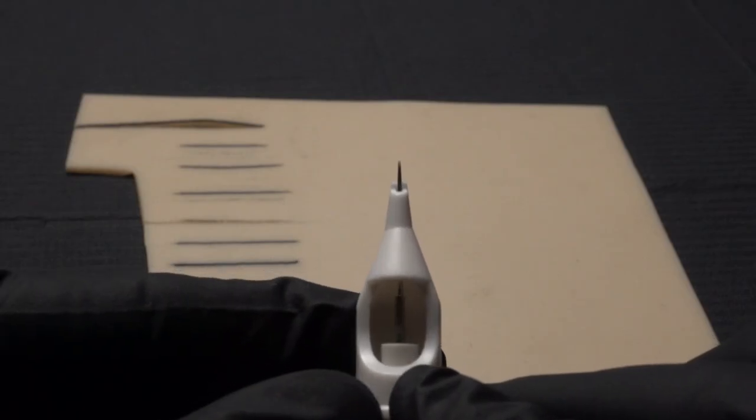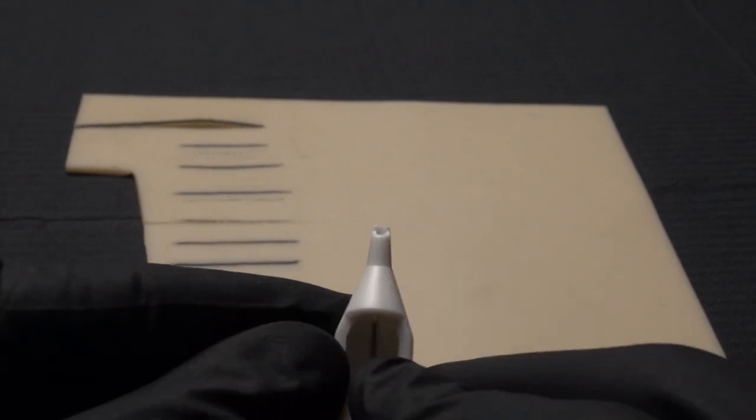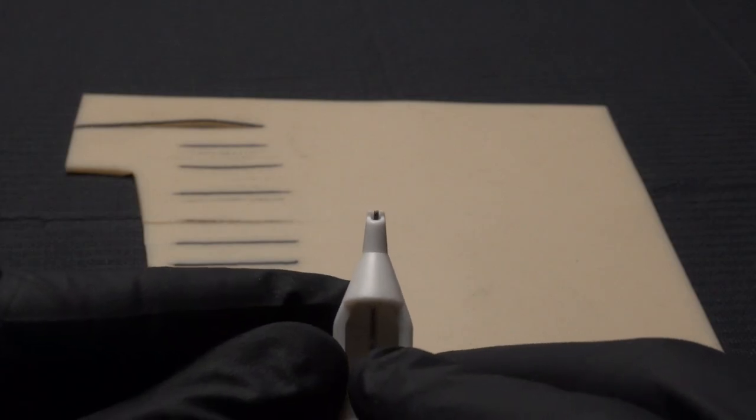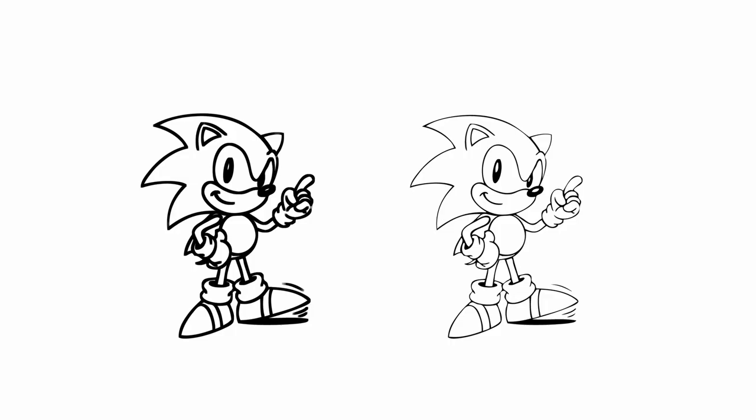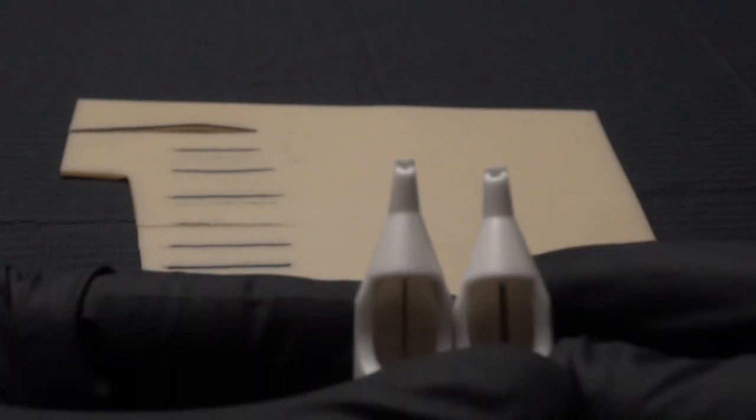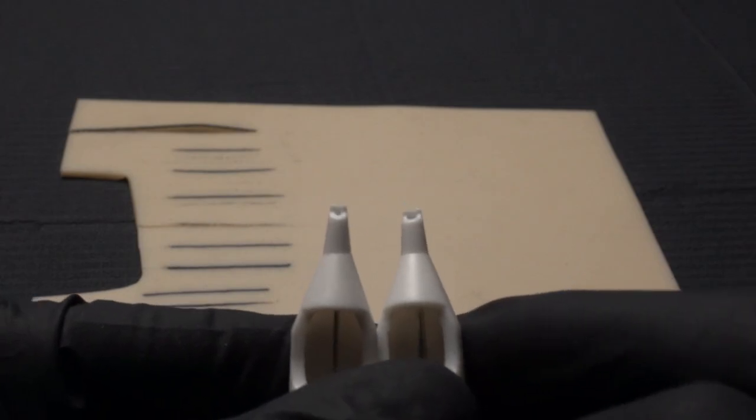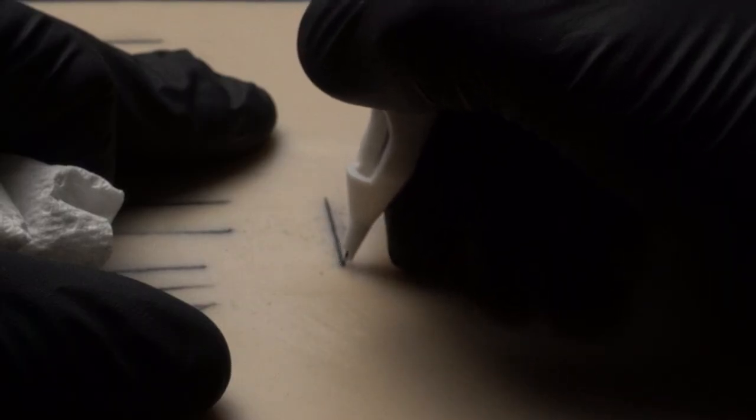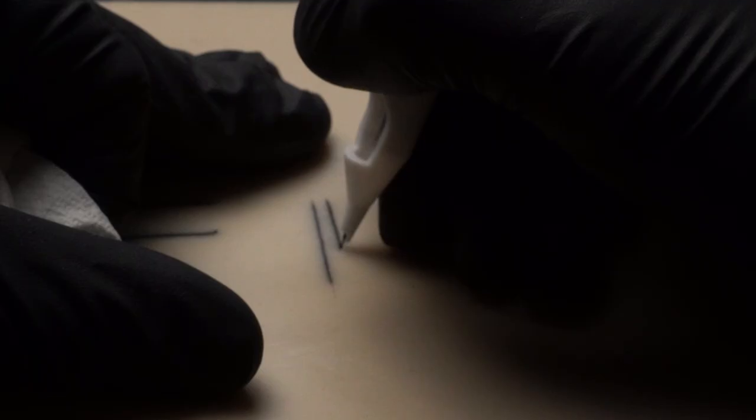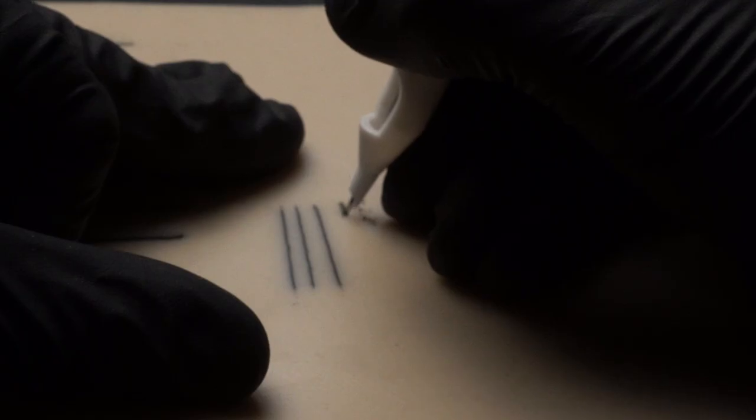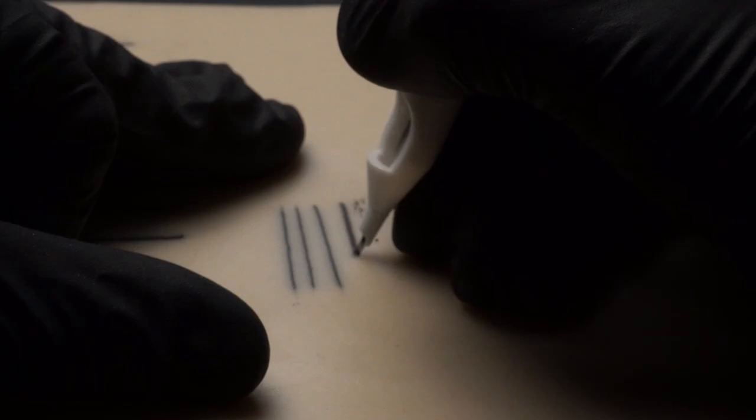So what is the ideal needle size? Well once again there is no ideal needle size. For liners the size of the needle determines the thickness of the line you're going to make. So in order to find the perfect size needle you only need to look at the design you're tattooing. For comparison let's take a look at the differences between a 3 round liner and an 8 round liner. As you can see the lines made with the 3 are thinner while the 8s are a bit thicker.